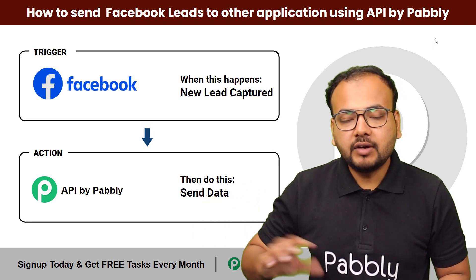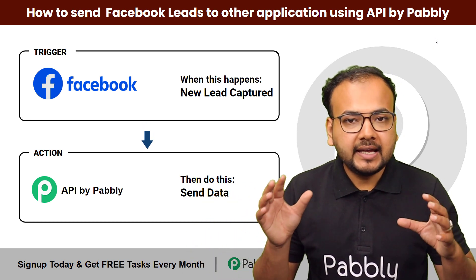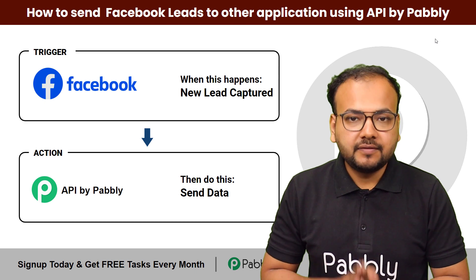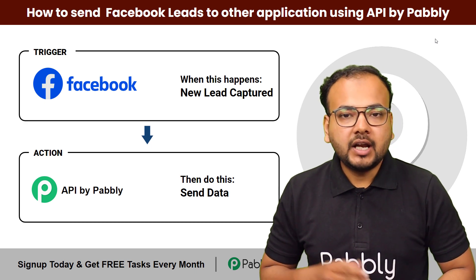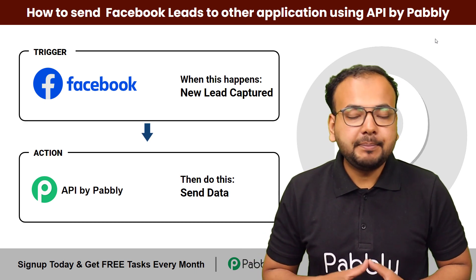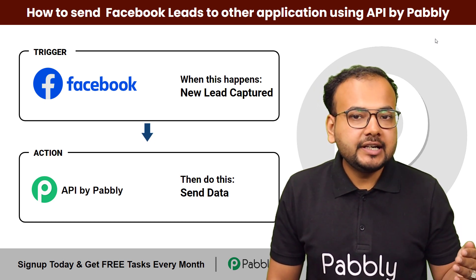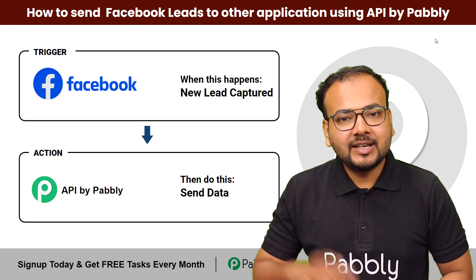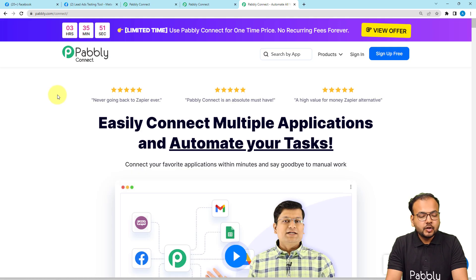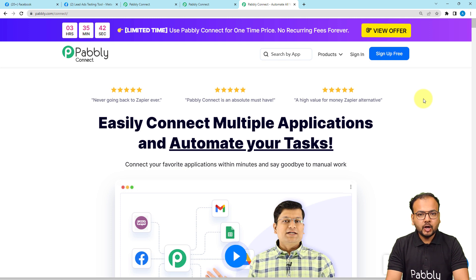This automation allows you to take your leads data and send it to any other application using the API by Pably Connect feature. Here I am going to show you a demo of how API by Pably Connect works. This is the landing page of Pably Connect — you can find the link in the description. From here you can sign up for free and you will get free automation tasks every month to test and set up your automations.